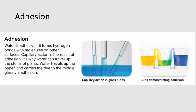Another property is adhesion, which is also formed from hydrogen bonds with molecules on a surface. Through adhesion and capillary action, water is able to stick to surfaces and climb. Capillary action is why water can travel up the stem of plants or up a paper towel — carrying dye to the middle. For example, when a diabetic pricks their finger to test blood, the blood is sucked up into the test tube via capillary action. Connecting two cups with paper towels using yellow and blue food coloring will cause the colors to mix in the middle through adhesion.